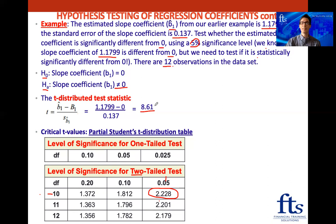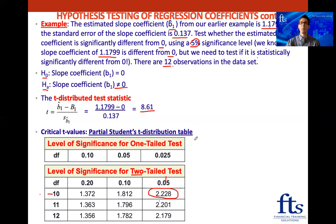Our test statistic way exceeds our critical value, which means we can reject the null hypothesis — and we can support the alternative that the slope coefficient is not zero. I'll also mention that in some CFA Institute practice problems, they give the test statistic and sometimes even the critical values, so we may not have to work everything out — they might just ask us to draw the conclusion. But we've covered all bases here.